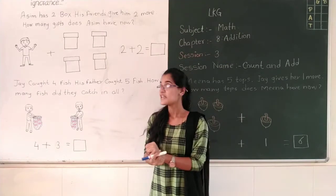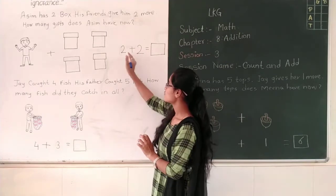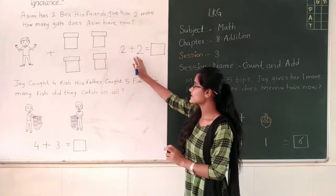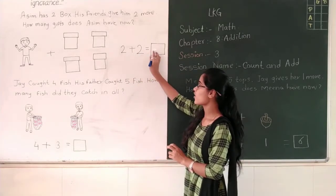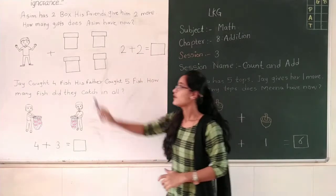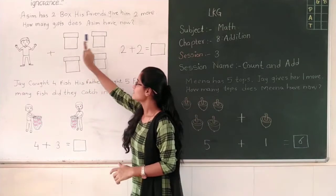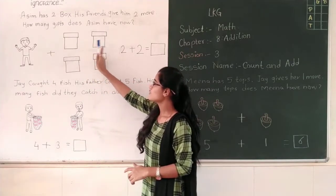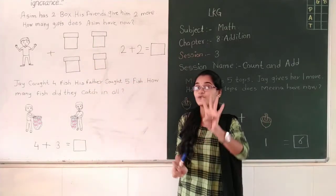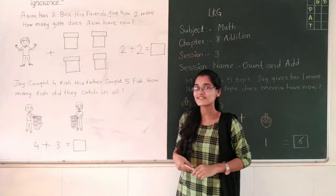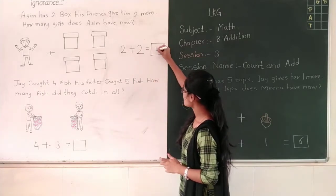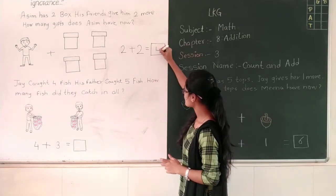Right. So 2 boxes plus 2 boxes is equal to how many boxes? 1, 2, 3, 4. 4 boxes. Right. Now I am going to write the number 4.